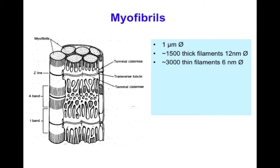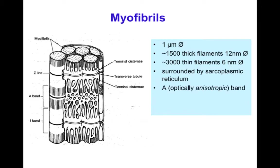Each myofibril consists of about 1,500 thick filaments (~20 nm in diameter) and 3,000 thin filaments (~6 nm in diameter), surrounded by the sarcoplasmic reticulum. The sarcomere is divided into classical regions: the Z disc, where actin thin filaments anchor; the M line down the middle; the dark A band (anisotropic to polarized light) where thick filaments are; and the light I band (isotropic to polarized light) where thin actin filaments are. The extracellular matrix actually organizes muscle fibers so that their Z discs and sarcomeres line up from cell to cell.